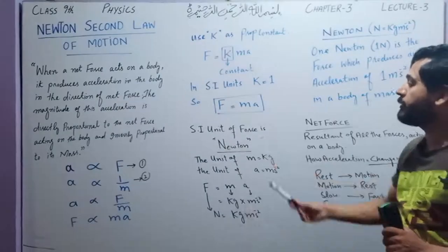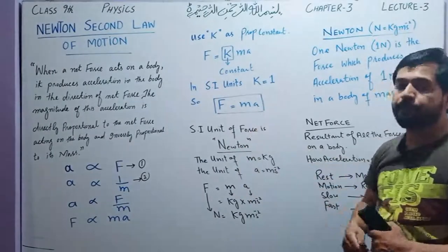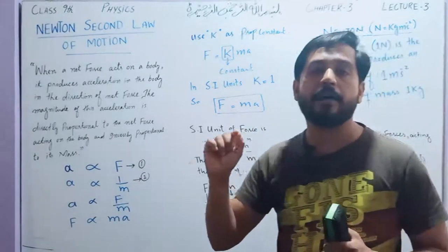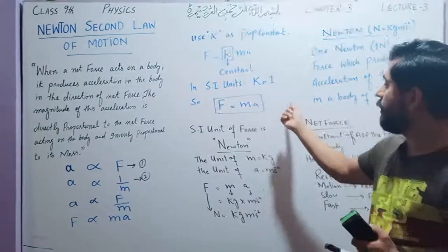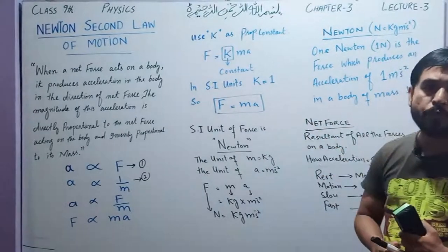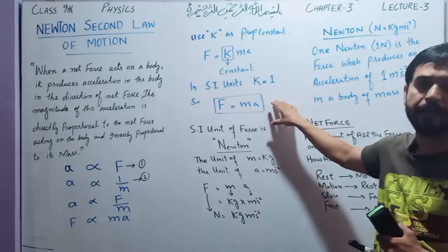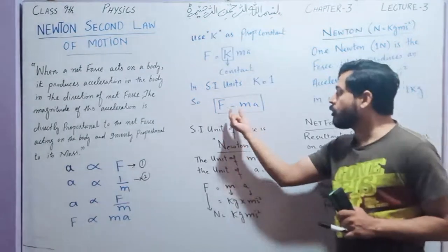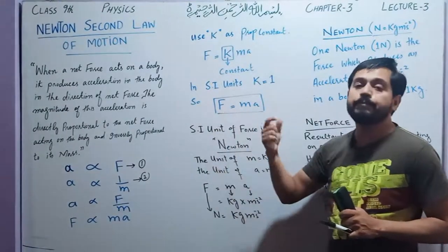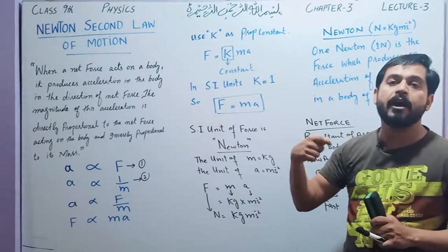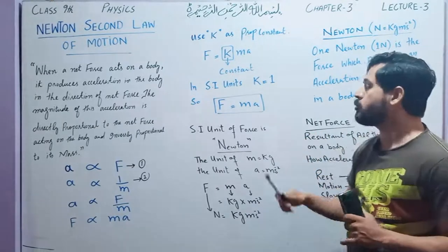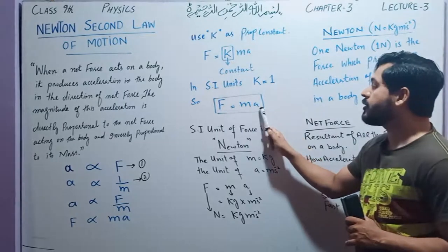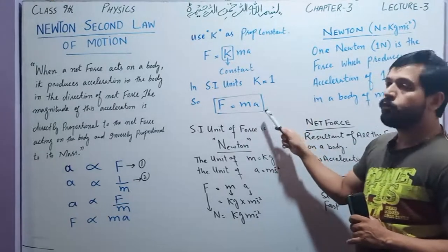The final formula is F = ma. This formula is the signature mark of Newton's second law. This formula is one of the most important formulas in physics. Newton's second law states that force is the product of two things: the mass of a body and the acceleration produced in the body.